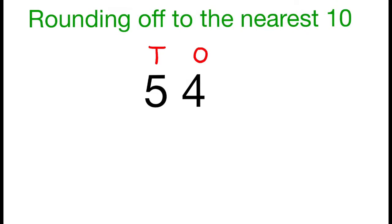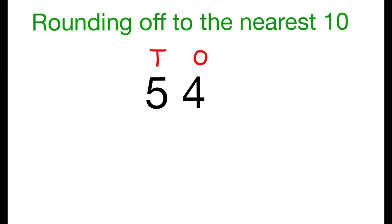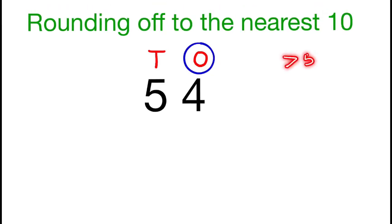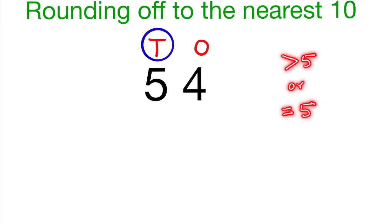If the digit in the ones place is less than 5, then there will be no change for the digit in the tens place. If the digit in the ones place is greater than 5 or equal to 5, then we add 1 to the digit in the tens place.